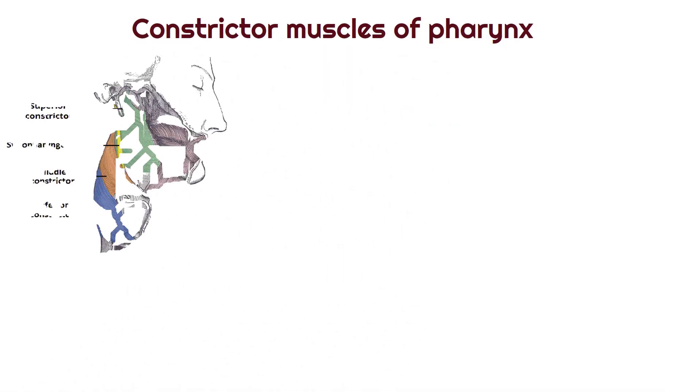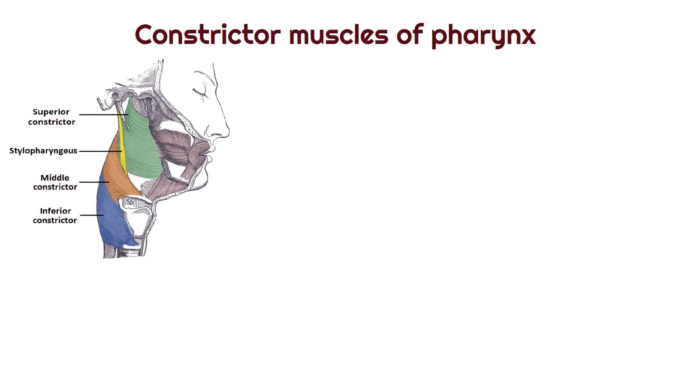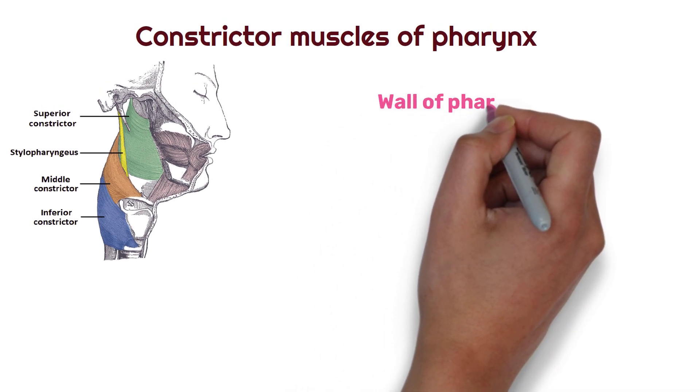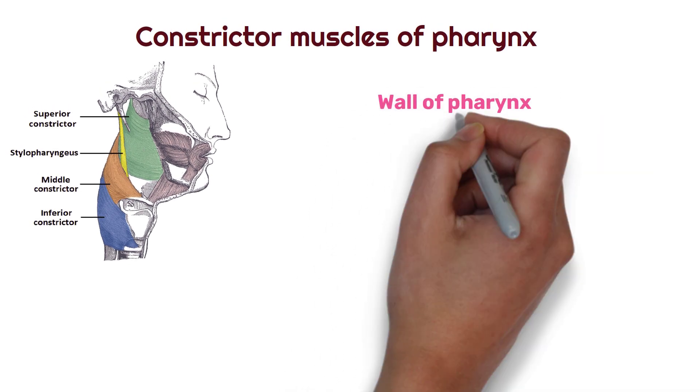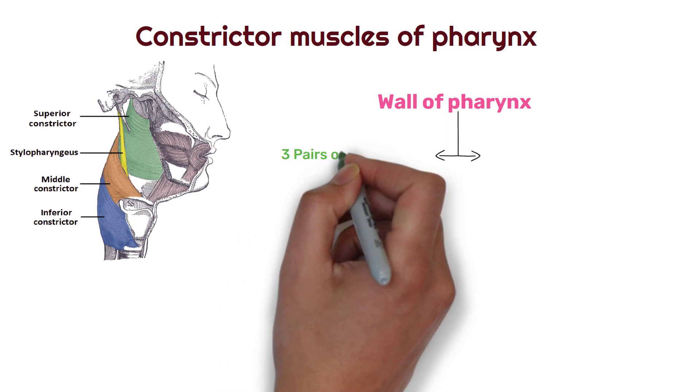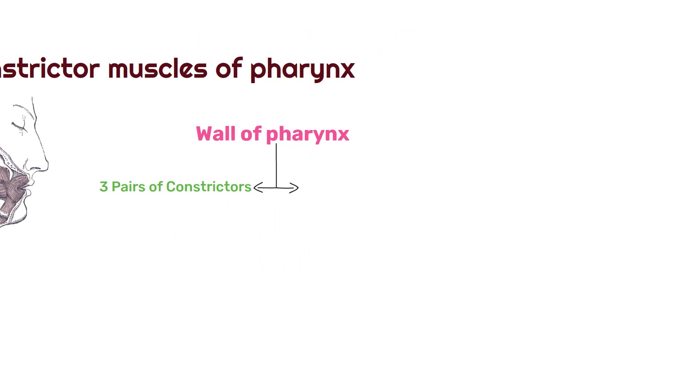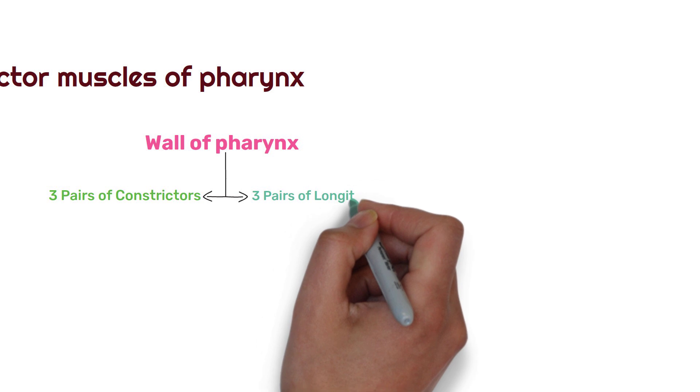Constrictor Muscles of Pharynx. The muscular basis of wall of pharynx is formed by two groups of muscles. First, three pairs of constrictors and second is three pairs of longitudinal muscle.